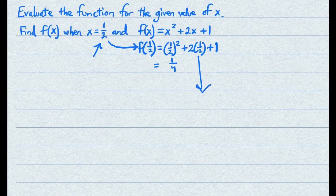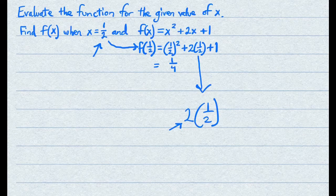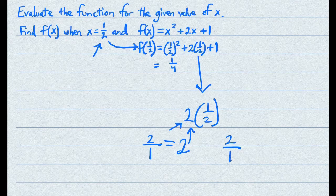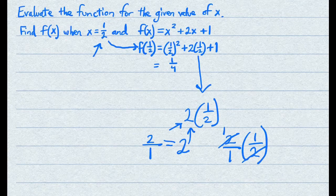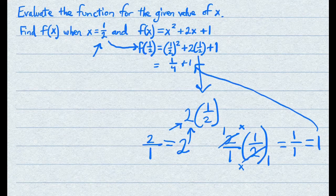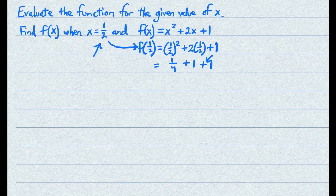Now what about the 2 times 1 half part? Whenever you have 2 by itself, that's really the same as 2 over 1. So you can rewrite it as 2 over 1 times 1 over 2. This 2 cancels out with that 2, and all you have left are 1's — 1 times 1 over 1 times 1 — which just equals 1. So this becomes plus 1. Then you bring down the plus 1, giving you 1 over 4 plus 2.